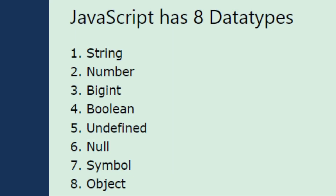JavaScript has 8 data types: String, Number, BigInt, Boolean, Undefined, Null, Symbol, and Object.